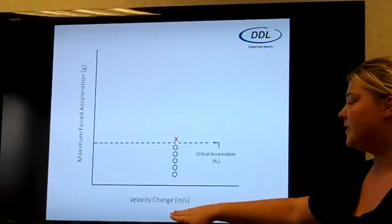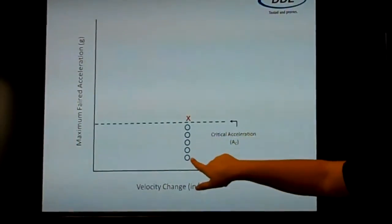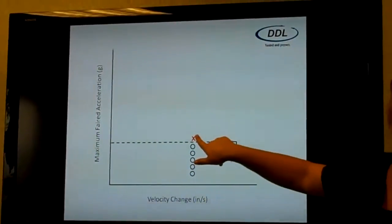So in here, your velocity change is not changing. But we're increasing the maximum fared acceleration for each drop until failure occurs.